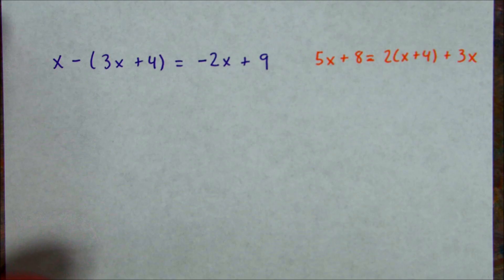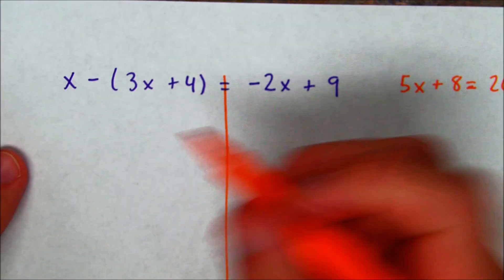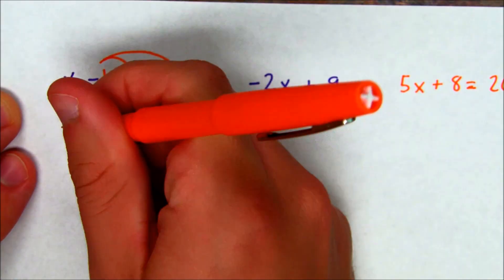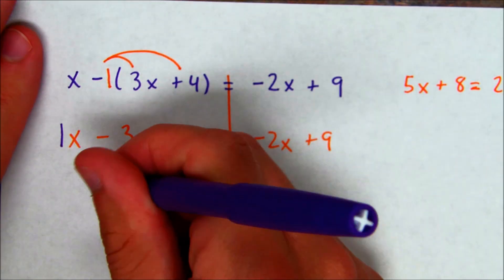Let's start with the one on the left. I'm going to start by drawing my brick wall. Keep it organized. Then I'm going to do the distributive property. Now I'm not going to distribute x here. What I'm going to distribute is that unseen negative 1. So I distribute my negative 1. So I get x minus 3x minus 4 equals negative 2x plus 9. Next, I'm going to combine my like terms on the same side. So positive 1x minus 3x is negative 2x minus 4 equals negative 2x plus 9.